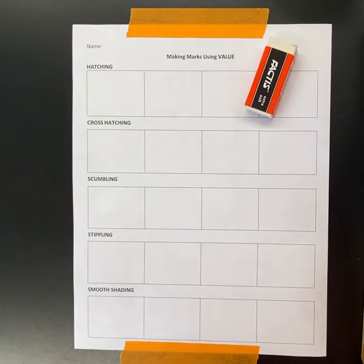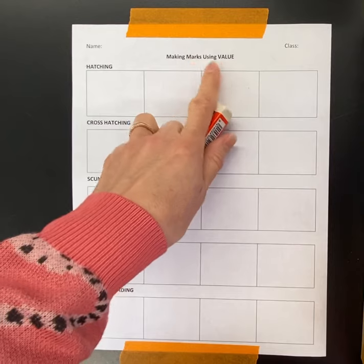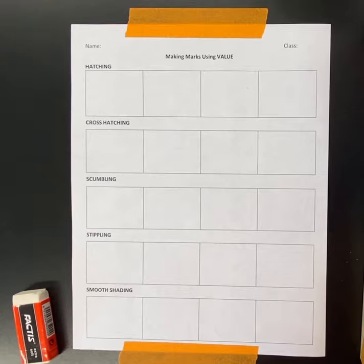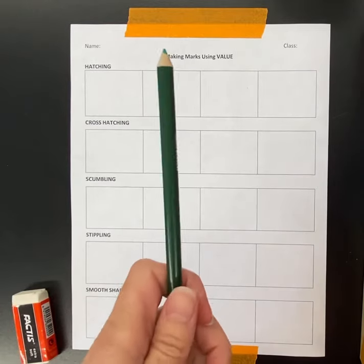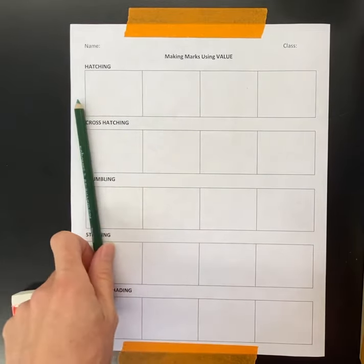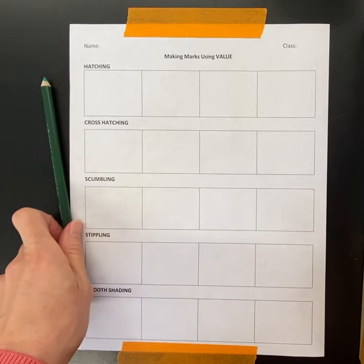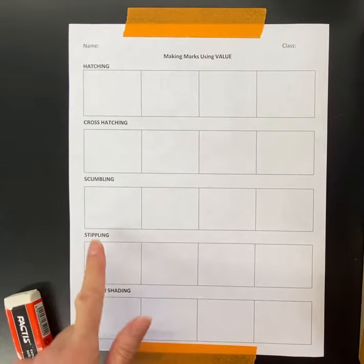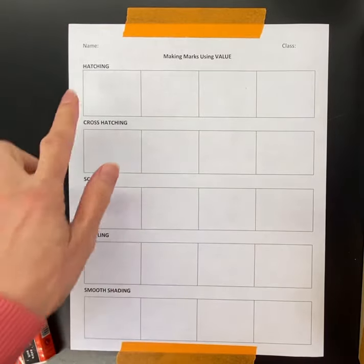Hey everyone, today we're going to be going over making marks using value. Value is the lightness or darkness of a color, and we're going to be trying this out in colored pencils since that's what we're going to be using for our actual final cartoon characters. We have hatching, cross hatching, scumbling, stippling, and smooth shading.